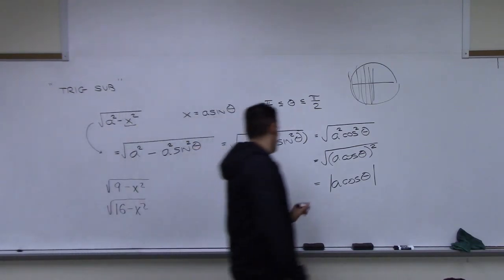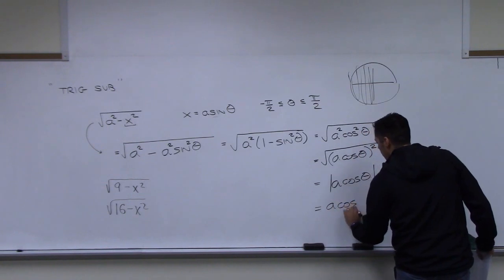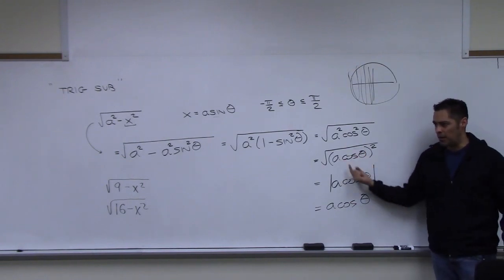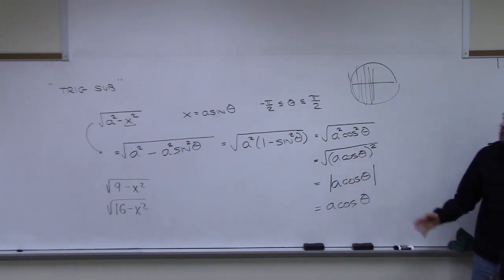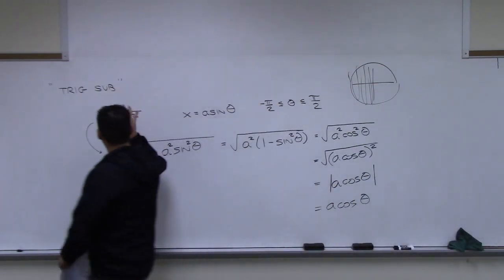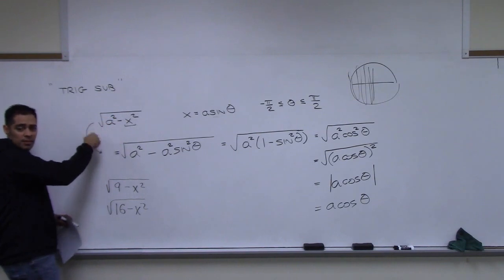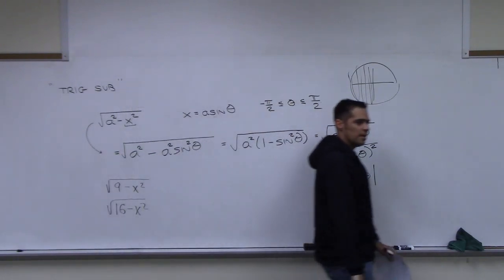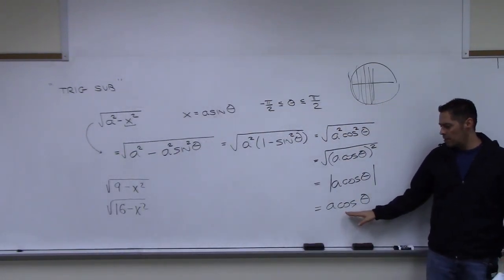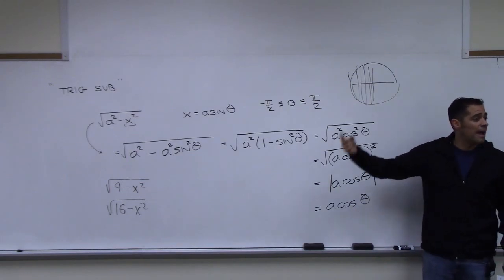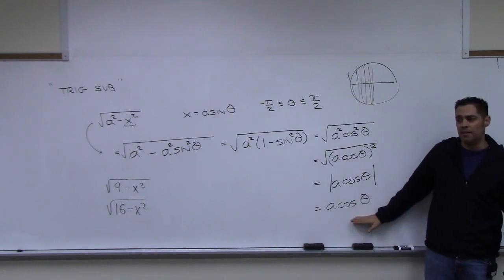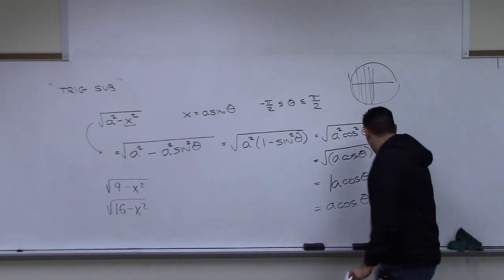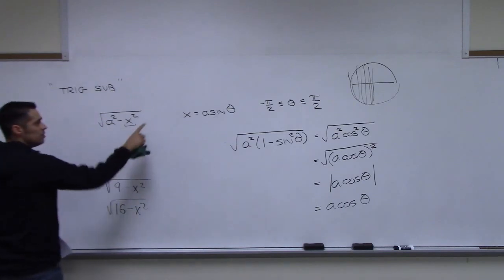The key step was factoring out A squared and using the Pythagorean identity, which collapsed two terms into one and let us take the square root. We went from a complicated expression with a root to just A cosine theta, which we can integrate. At the end, we switch back from theta to x.